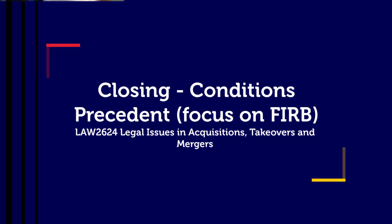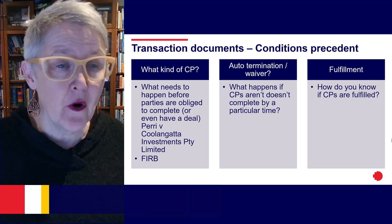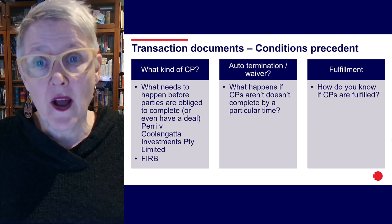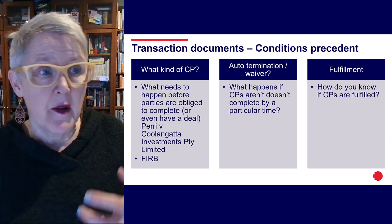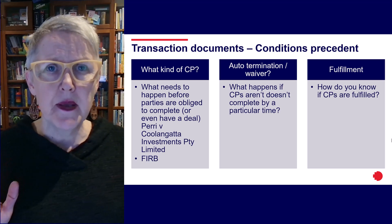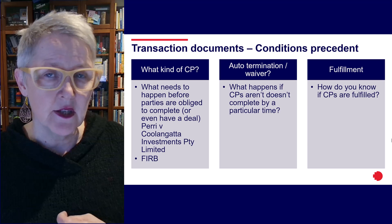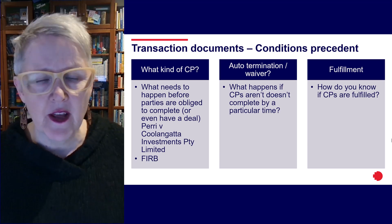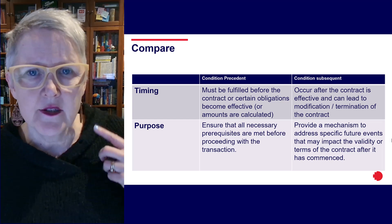This time we're going to revisit conditions precedent. As a reminder, a condition precedent is essentially a checkpoint that needs to be satisfied or waived before the completion of a business sale and purchase agreement or a share sale and purchase agreement. We've now moved past negotiation — the agreement is signed — and we're in the period before closing, so we need to make sure the conditions precedent have been fulfilled, or if they can be waived, or modified into conditions subsequent.